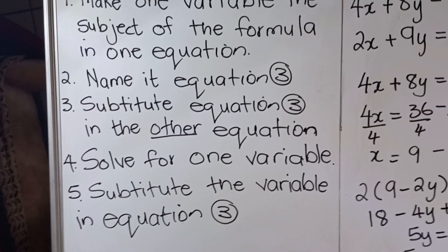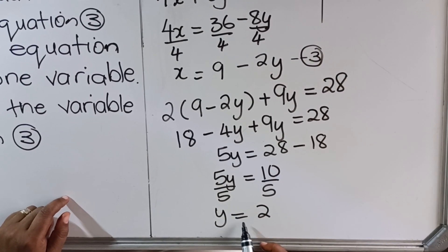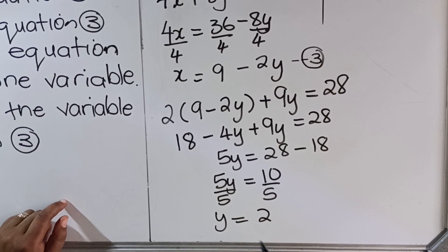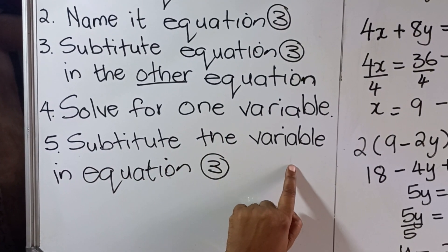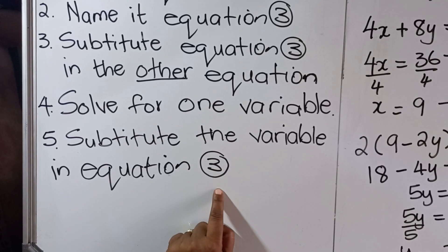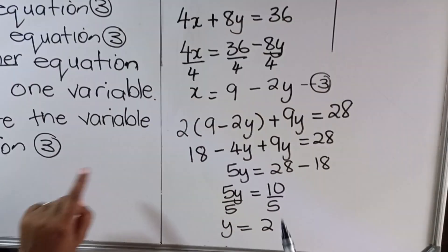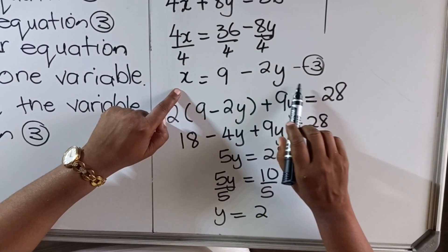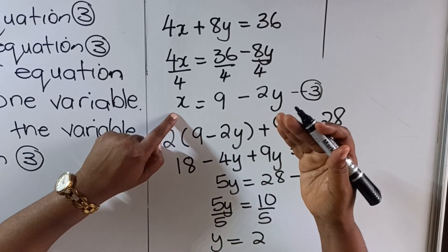They say solve for one variable - we've already done that. We have solved for one variable, so we can see that y = 2. We've already found our y, so we need to find x. Step 5 says substitute the variable in equation 3 - the variable that you just found. You substitute it in equation 3. Why do we use equation 3? Because equation 3 is already saying x is equal to something, so we don't have to solve it again.